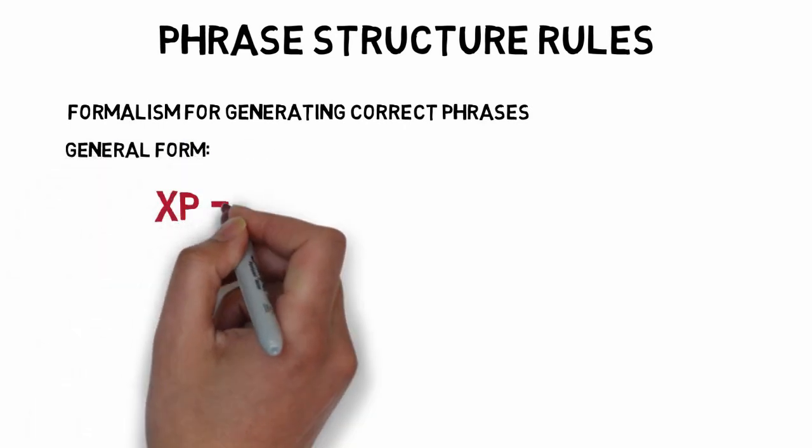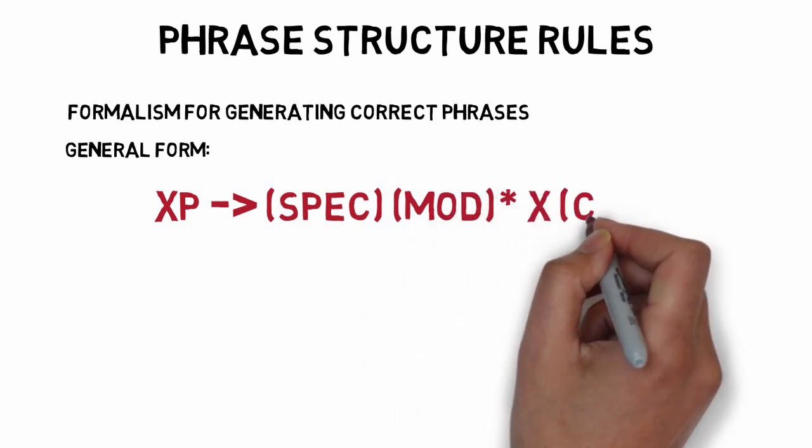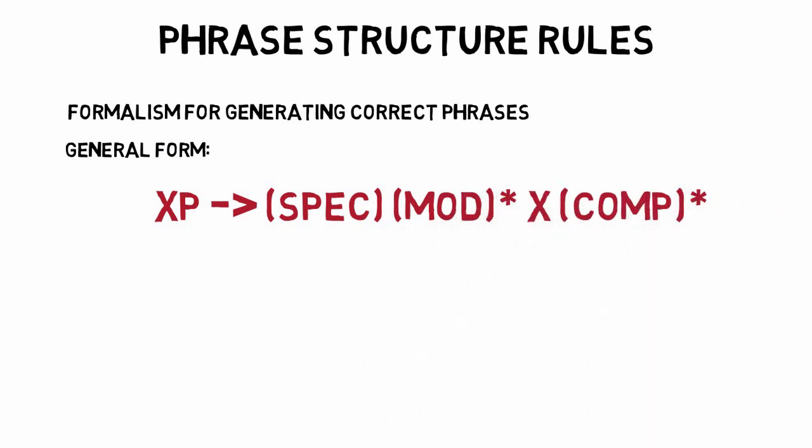Phrase structure rules take the following general form. Let's read this through. This means XP, which is simply a placeholder for any sort of phrase, is made up of, which is what the arrow is...